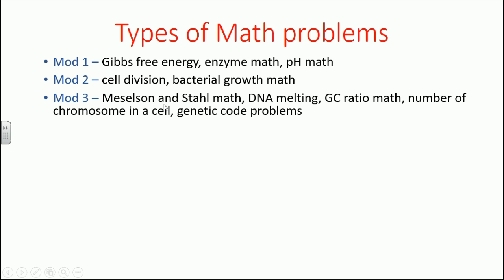Module 3, the molecular biology part, they may sometimes ask questions from Meselson and Stahl experiment, DNA melting, GC ratio and the number of GC in the DNA, number of chromosomes present in the cell, and sometimes associated genetic code problems. In Module 6, plant physiology, they'll ask questions associated with water potential and solute potential.